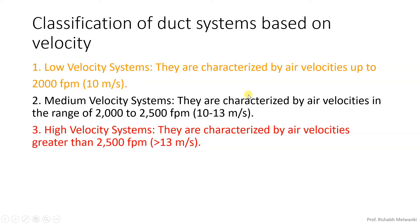Now, based on velocity, ducts are classified as low velocity, medium velocity, and high velocity. If you consider low velocity, velocities up to 2000 FPM or 10 meters per second are called low velocity systems. Velocity between 2000 to 2500 FPM, or 10 to 13 meters per second, is called medium velocity systems. The SI unit of velocity is meters per second, while IP units used by the United States — also called Imperial units — use FPM. That is why both are given here since ASHRAE is an American society that mostly follows IP units.